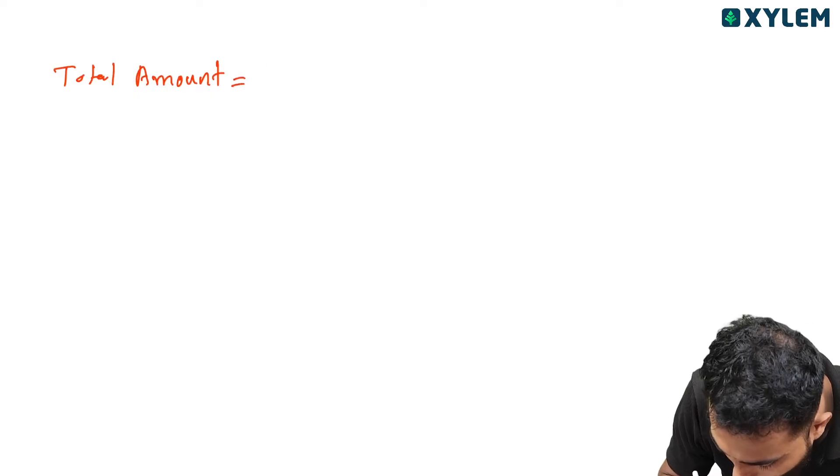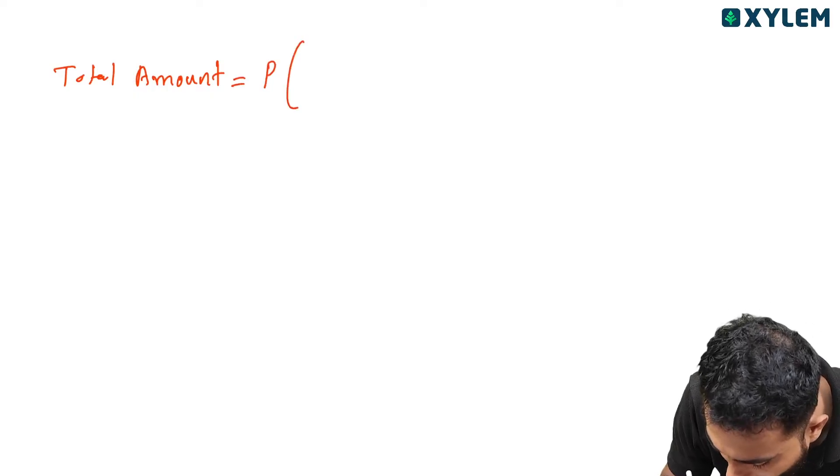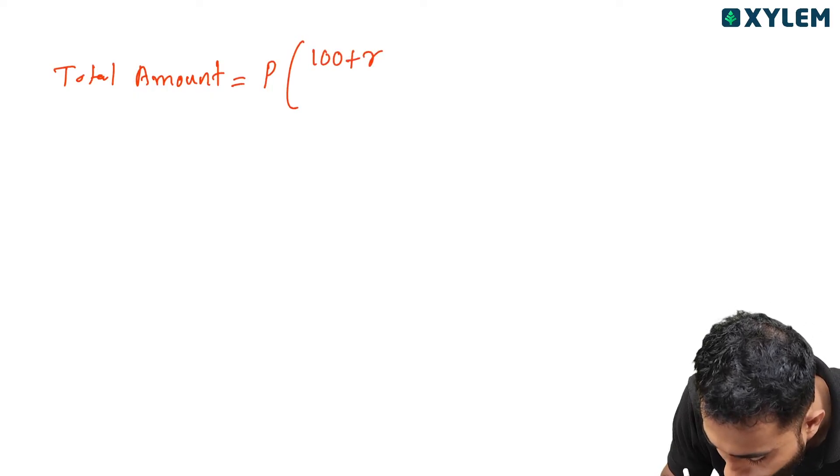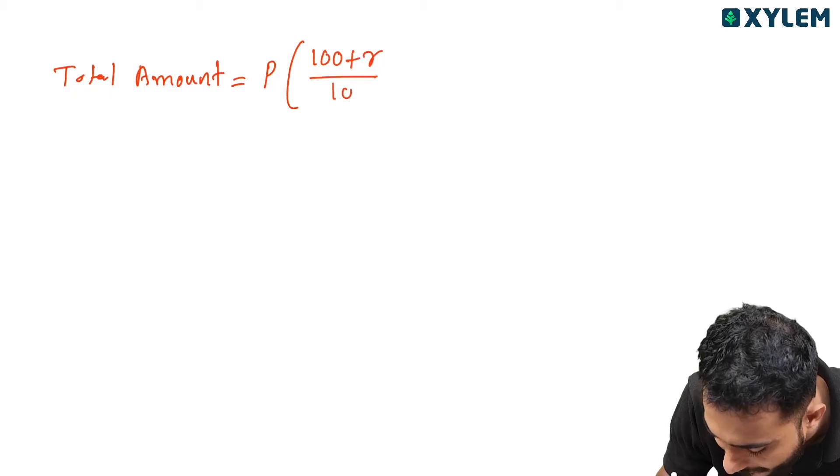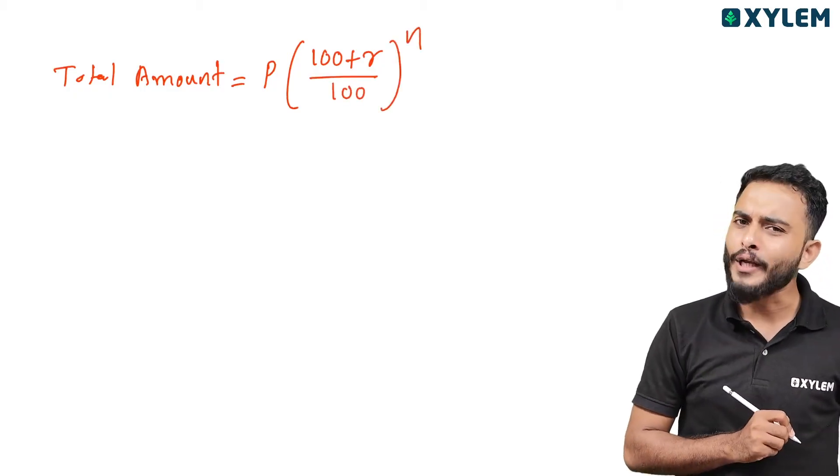The formula for total amount is: Total Amount = P × (100 + R)/100 raised to the power N.